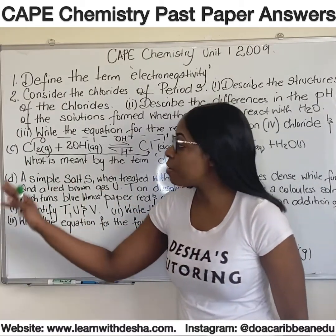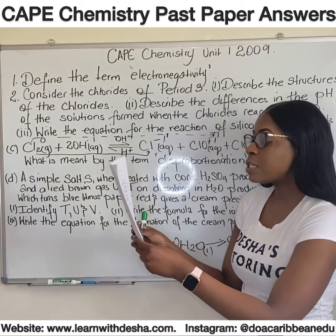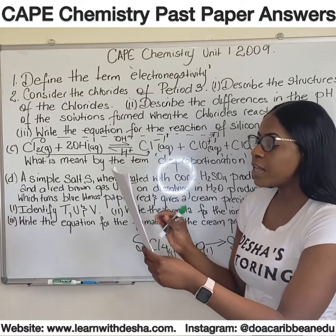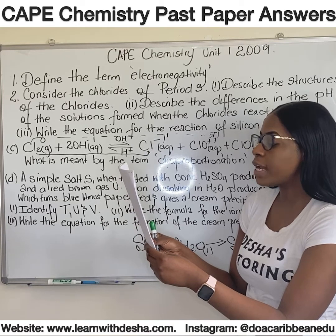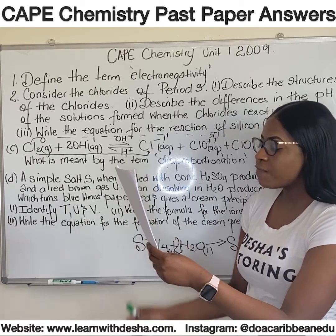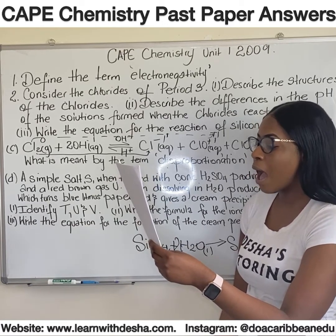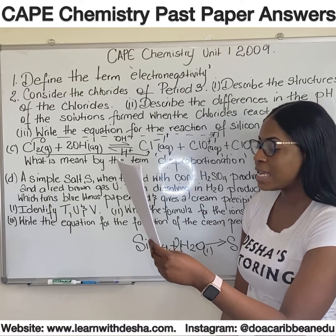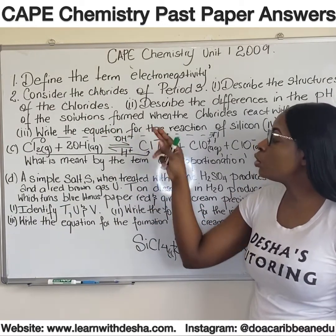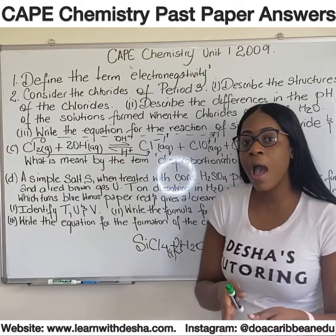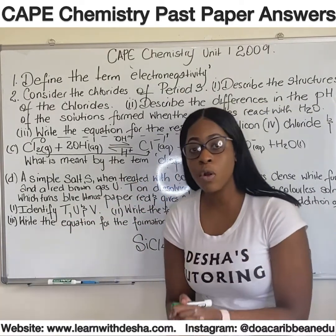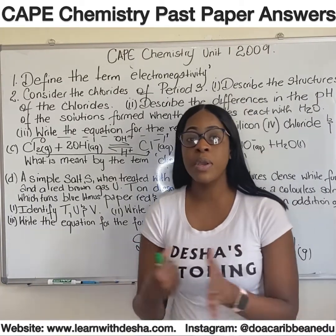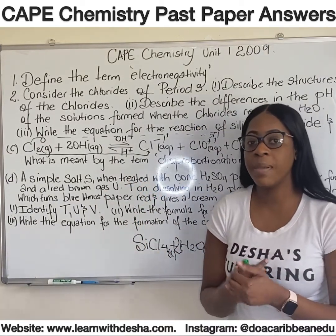Moving on to the second part of this same question. A suspension is formed when excess silver ions are added to solution P. On filtering the suspension and heating the filtrate, a white precipitate is formed. The filtrate contains both silver ions and chlorate ions. When silver nitrate is added to the solution with chloride ions, the silver ion combines with the chloride ions to form a silver chloride precipitate — the white precipitate — while the other ions act as spectator ions.